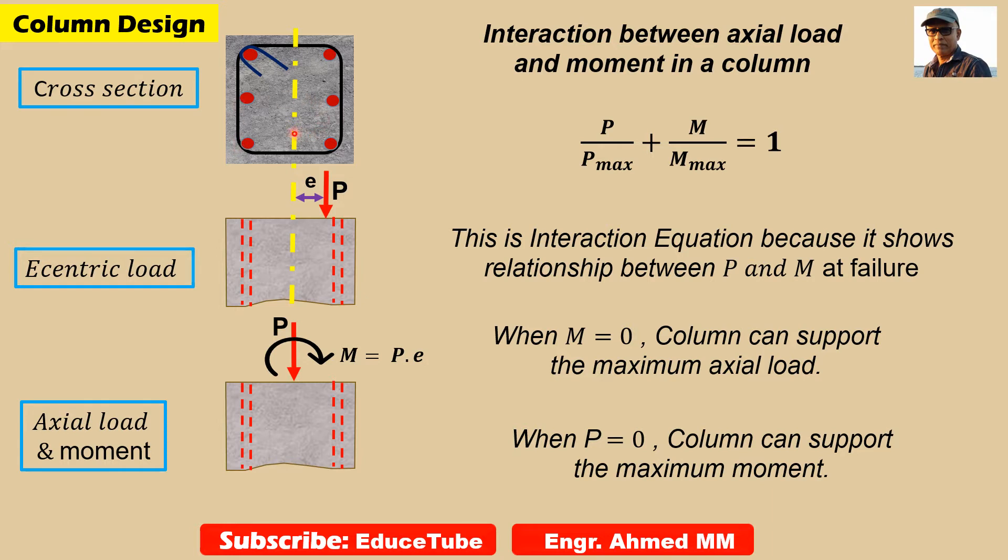Here I have taken a cross section and there are two cases: eccentric load and axial load with moments. Actually these two cases are the same because this distance e is eccentricity, and this eccentric load can be replaced by a load P acting along the centroidal axis plus a moment which is equal to P into e.